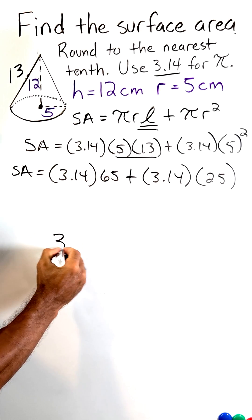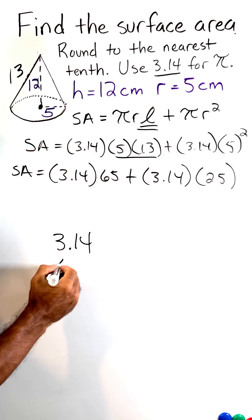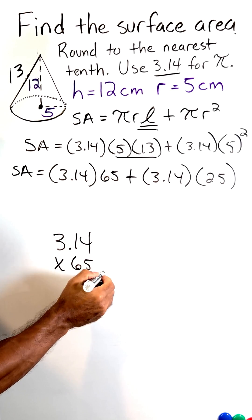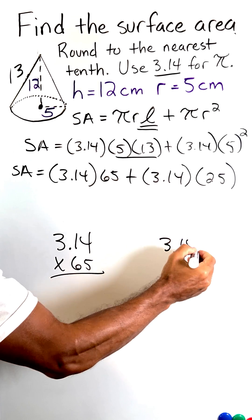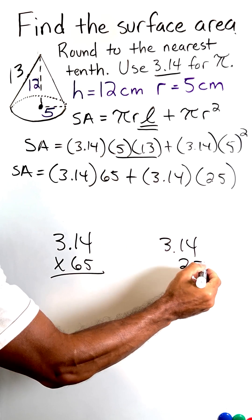All right, now we have to do some quick multiplying here. We're going to take 3.14 and multiply that by 65. We also have to take 3.14 and multiply that by 25.